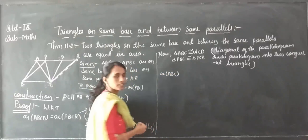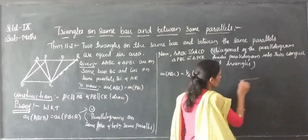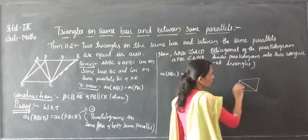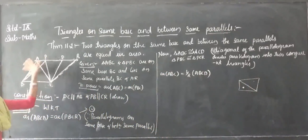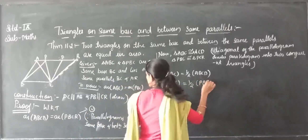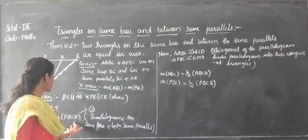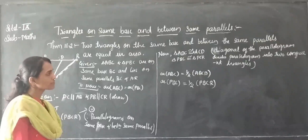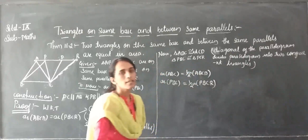So the area of triangle ABC is half of the area of parallelogram ABCD. Similarly, the area of triangle PBC is equal to half of the area of parallelogram PBCR. Now, according to the equation, ABCD is equal to PBCR, which means half of one equals half of the other — so the complete parallelogram areas are equal.